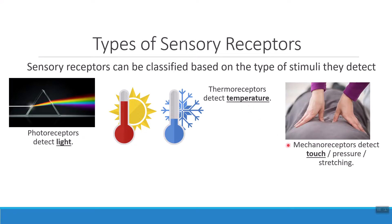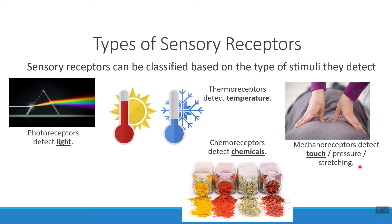We also have what are called mechanoreceptors. Mechanoreceptors are detecting mechanical sensations — things like touch sensations or pressure, stretching inside your muscles or your ligaments — all of those kinds of mechanical things detected by mechanoreceptors. When we talk about the senses of taste and smell, the type of receptors that help us with that are called chemoreceptors.